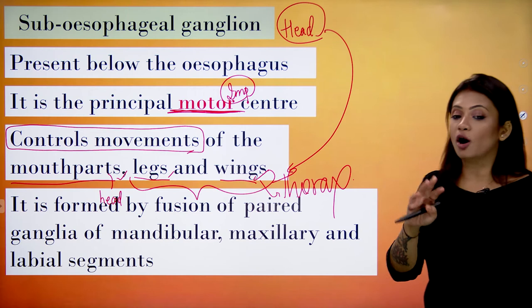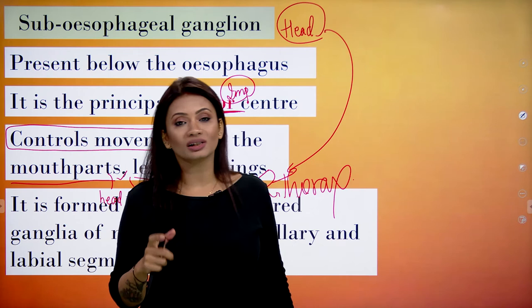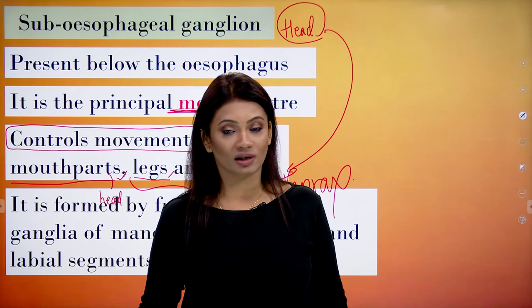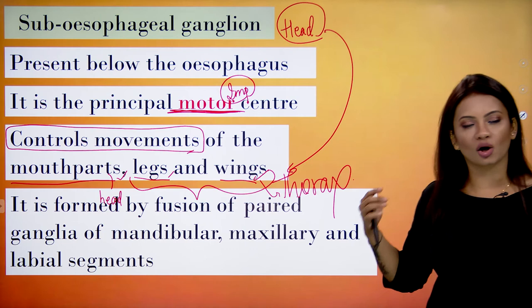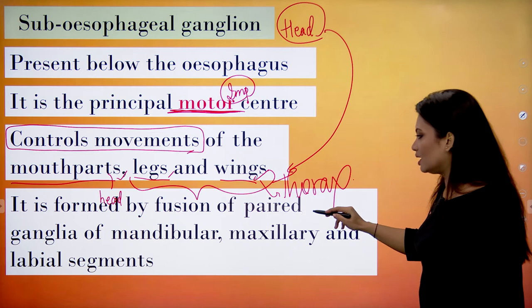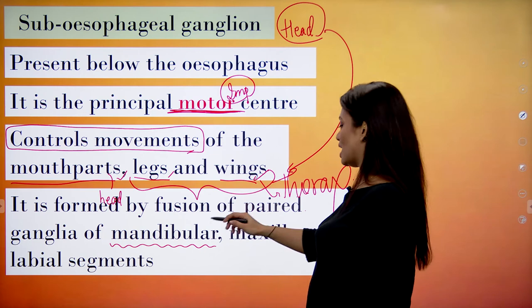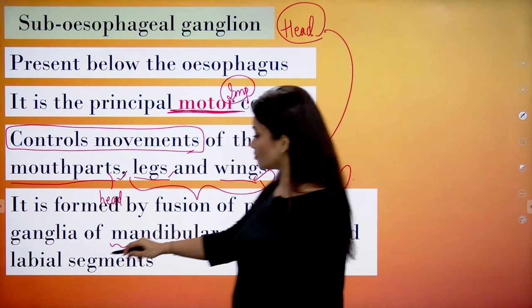The sub-esophageal ganglion is formed by the fusion of paired ganglia. All the ganglions are going to be paired, except the last one which is the largest. The sub-esophageal ganglion is formed by the fusion of paired ganglia of the mandibular (upper jaw), the maxillary (lower jaw), and the labial segments.